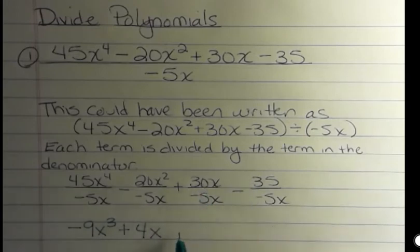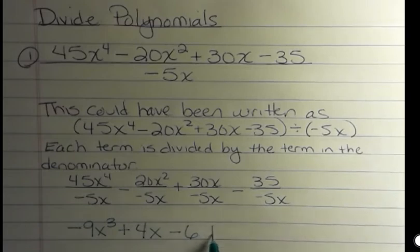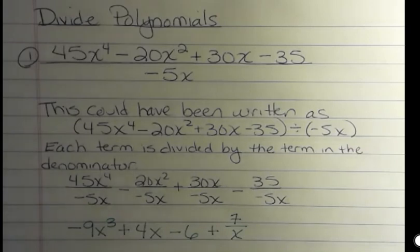30 divided by negative 5 is negative 6. My x's are going to cancel out completely. And then here I have two negatives. When I divide with two negatives, I get a positive. And I can see that I have 35 divided by 5, which is 7. But I can also see that there's an x in the denominator that's not going away. So I end up with 7 over x.